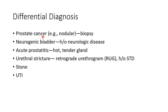Now let us see about the differential diagnosis of BPH. Prostate cancer can be differentiated from BPH by digital rectal examination — in prostate cancer, we will find nodules. However, the definitive diagnosis can be made using biopsy. Other differential diagnoses include neurogenic bladder, in which there will be a history of neurologic disease; acute prostatitis, in which the prostate will be hot and tender; and urethral stricture, which can be diagnosed using a retrograde urethrogram and usually has a history of sexually transmitted disease. Other differential diagnoses of BPH include urinary stone and urinary tract infection.